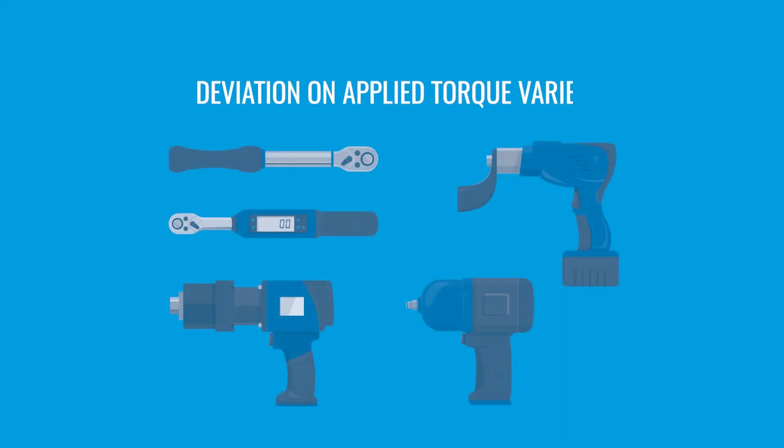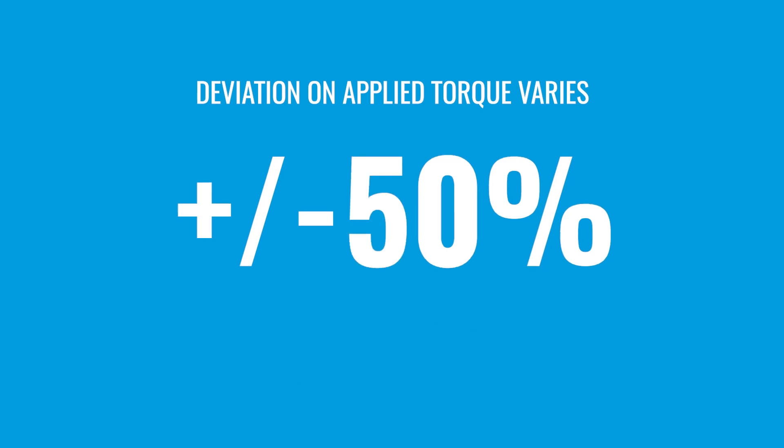In addition, coefficients of friction are highly variable, plus or minus 20% usually, thereby introducing scatter in the process. Also, despite tightening tools can be very accurate, the deviation on applied torque varies from plus or minus 10% to plus or minus 50%. Many operators get confused when realizing how much influence their position and how they handle the tool have on the applied torque.